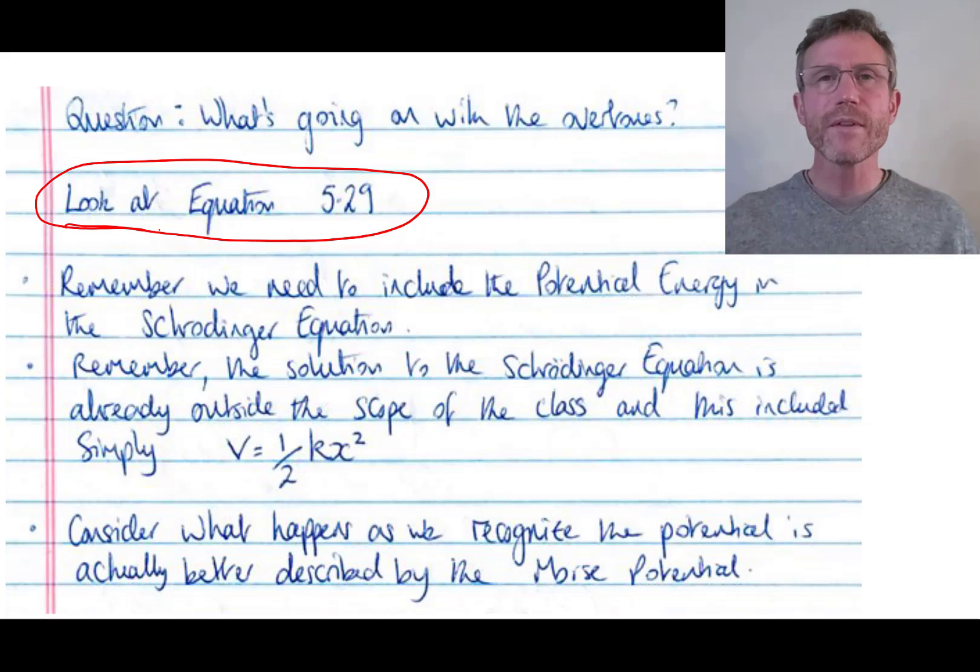with these harmonic oscillators, we have to include the potential energy in our Schrodinger equation. So what equation 5.29 does is it starts to describe that potential energy, but now in terms of this Morse potential. It starts to mirror reality.